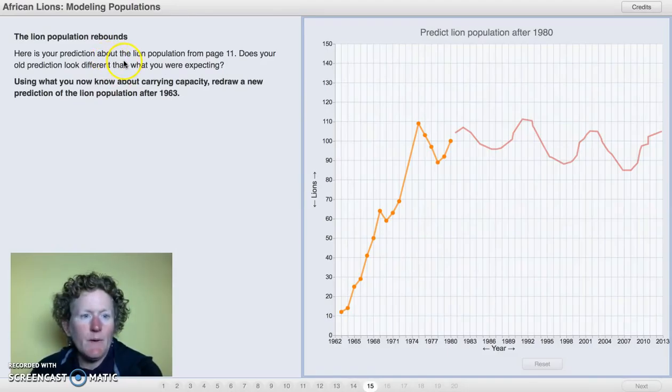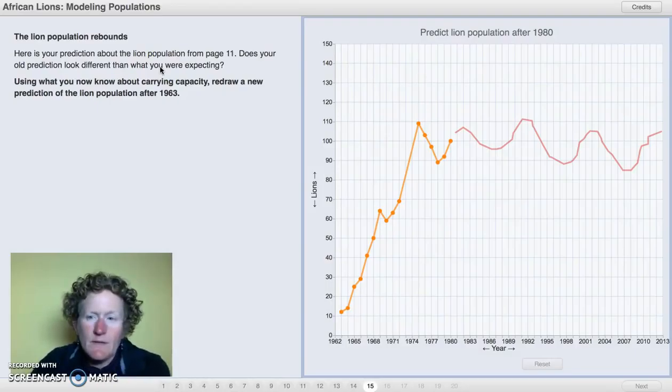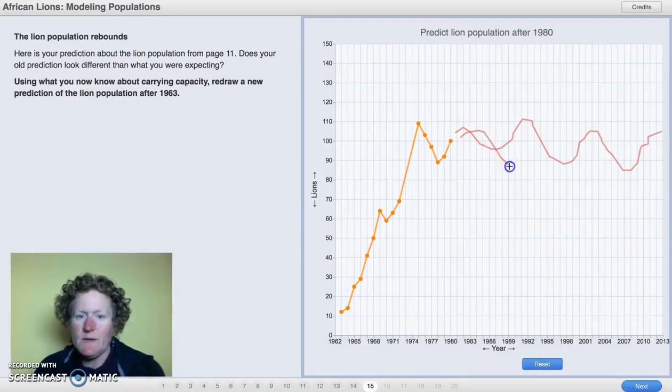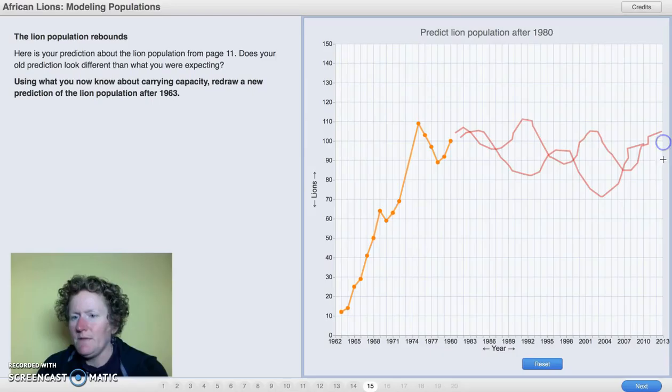Here's our prediction about the lion population from page 11. Does our old prediction look different than what we might have been expecting? Use what you know now about carrying capacity. Redraw a new prediction of the lion population after 1963. I still think it's going to be around the carrying capacity, but maybe it'll be a little bit lower, because the carrying capacity was between 75 and 100. So I'll draw my curve maybe a little bit lower. And I know climate change is affecting Africa, so that might be a factor as well.